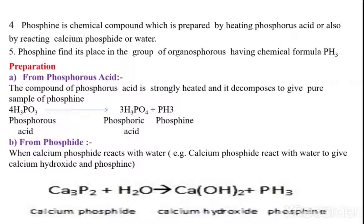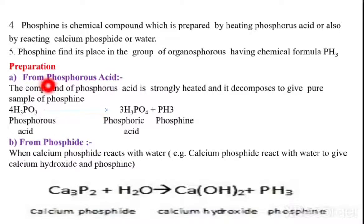Phosphine is a chemical compound which is prepared from phosphoric acid, or also by reacting calcium phosphide with water. Phosphine finds its place in the group of organophosphorus compounds, having the chemical formula PH3. Now, the preparation: phosphine is prepared by two methods. Number one, from phosphorous acid.